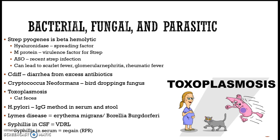For bacterial, fungal, and parasitic infections: for strep, know the hyaluronidase spreading factor, the M protein, and the ASO titer. Also be familiar with C. diff, cryptococcus, and toxoplasmosis. Be able to differentiate these organisms based on their distinguishing characteristics.